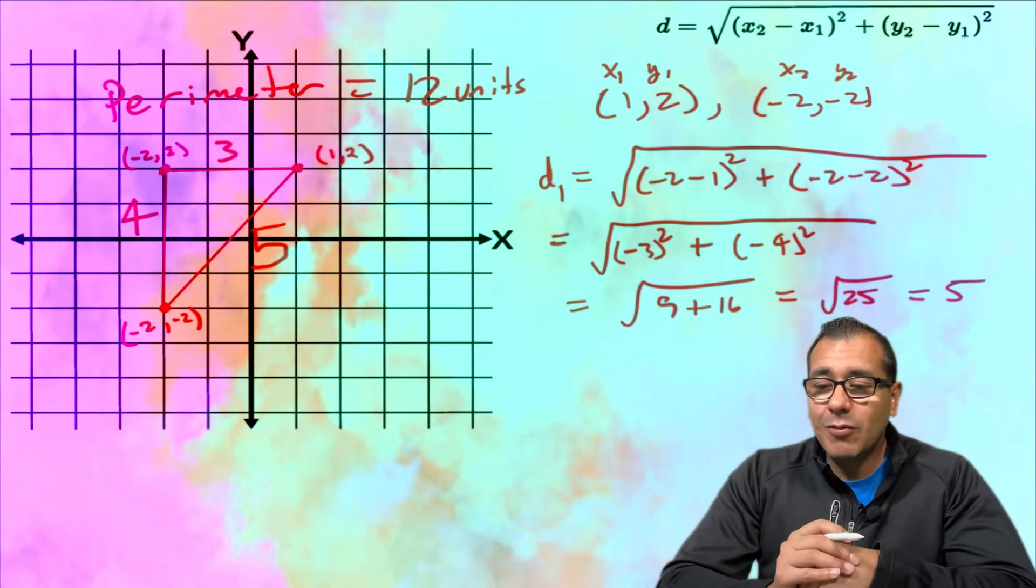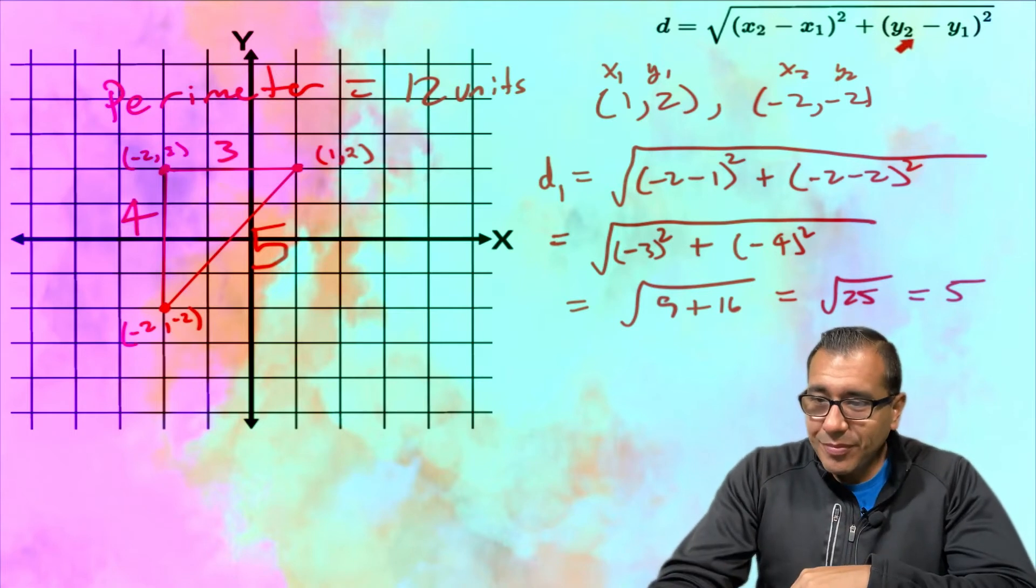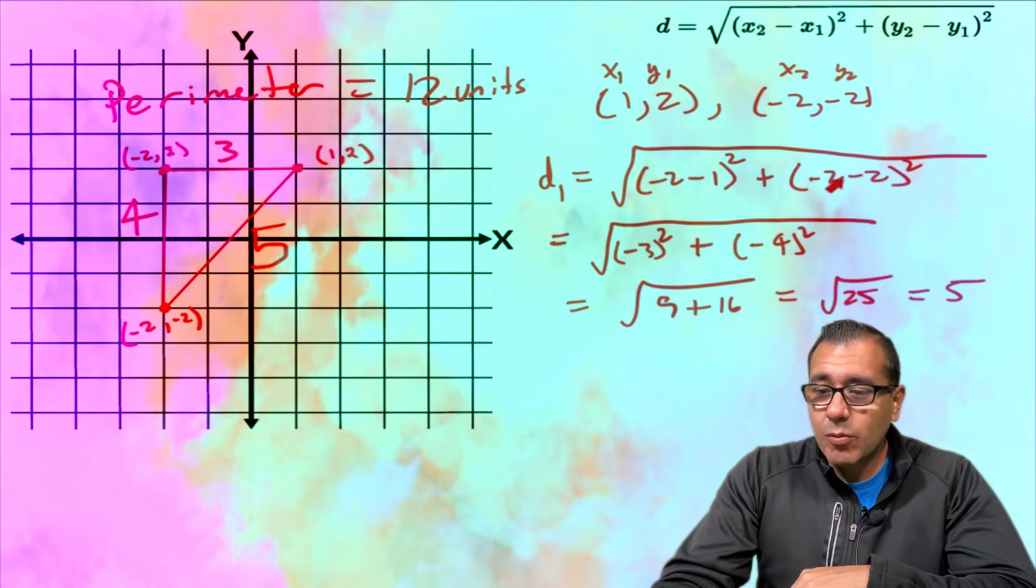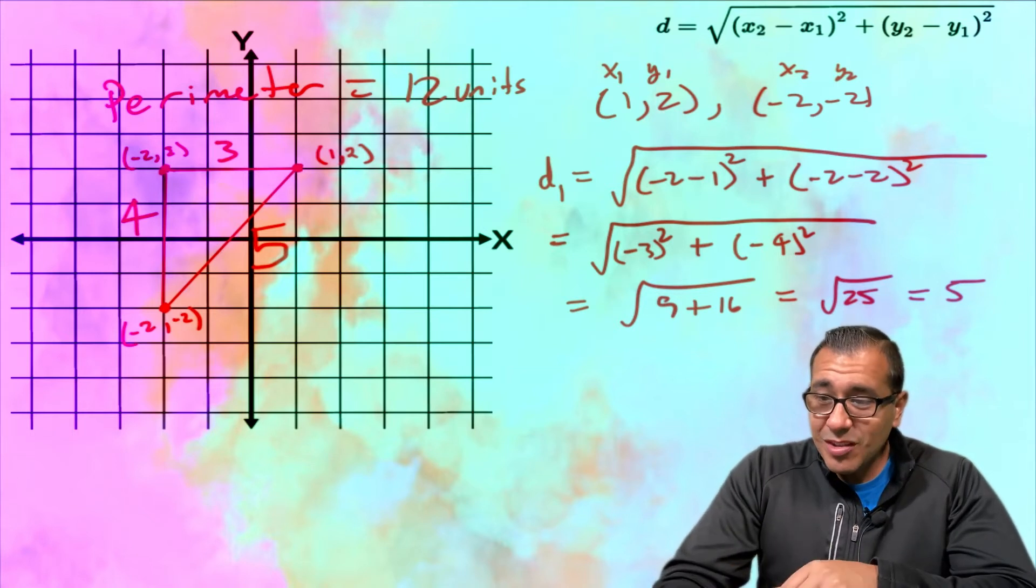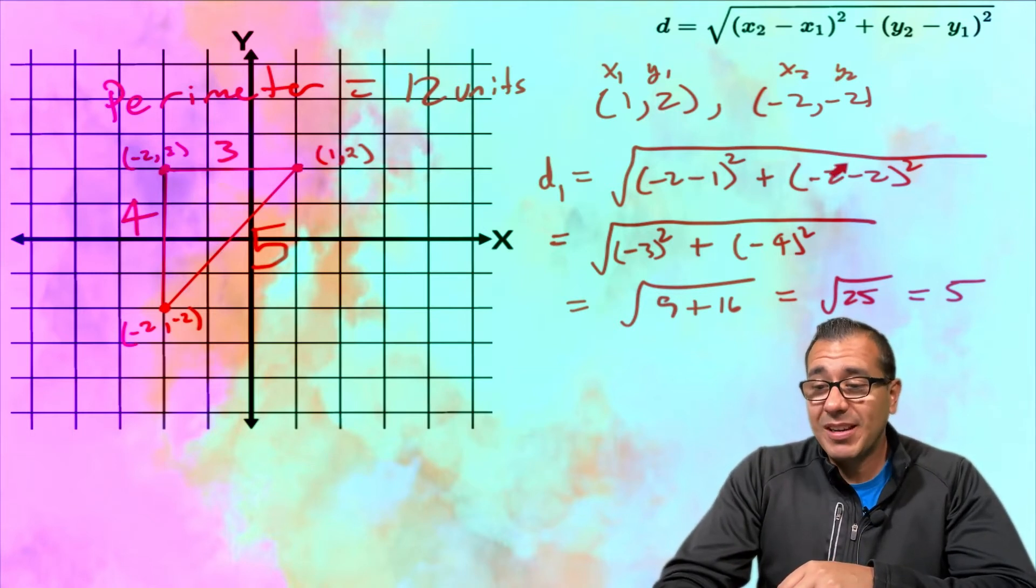y2 minus y1, so y2 is -2 minus y1 which happens to be 2. So I'm going to take that quantity and I'm going to square it.